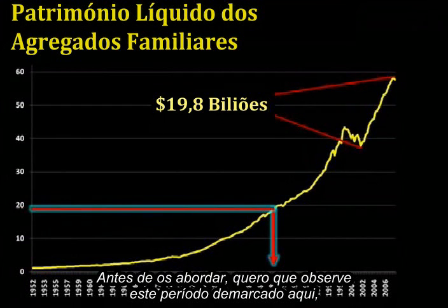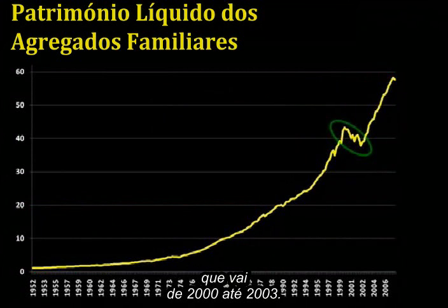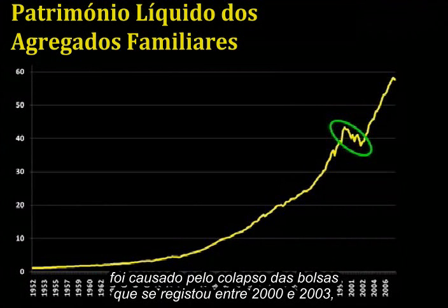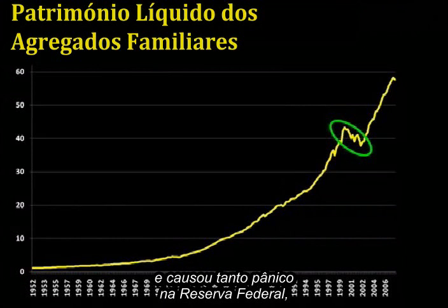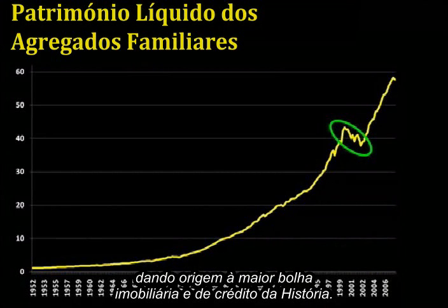I want you to observe this period spanning from 2000 to 2003. That dip in the net worth of households was due to the stock market collapse that ran from 2000 to 2003, and caused such great panic at the Fed that Greenspan lowered interest rates to the emergency rate of 1%, thereby igniting the greatest housing and credit bubble in all of history.